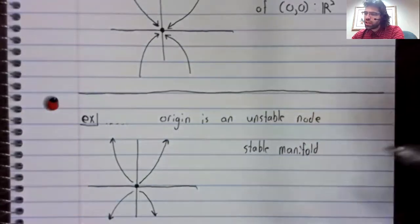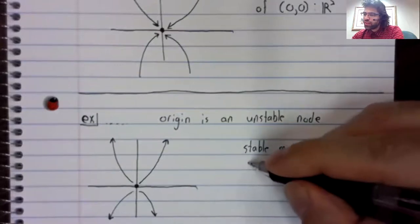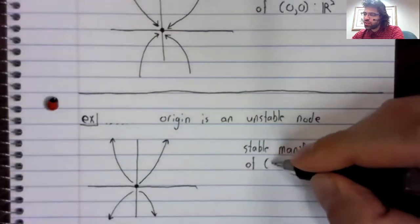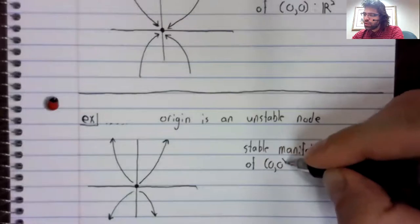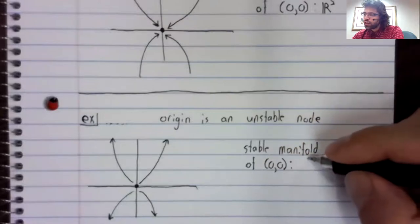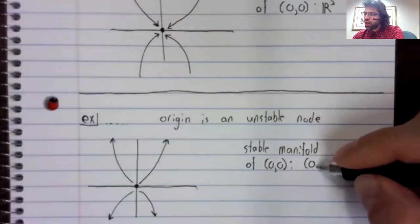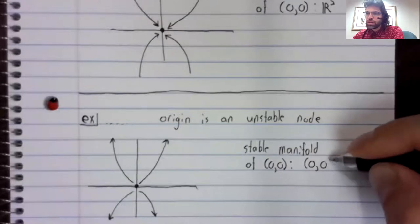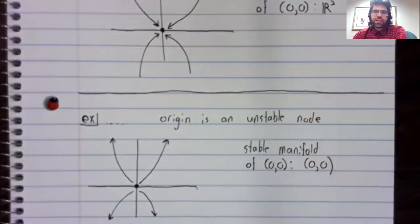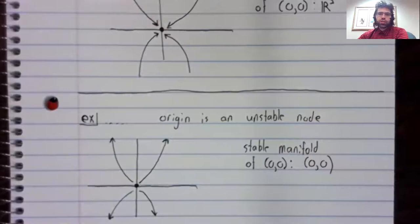It does have one point in it. A trajectory that starts at the origin remains there, but otherwise there are no points in the stable manifold.